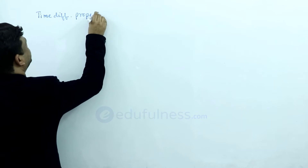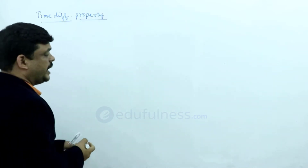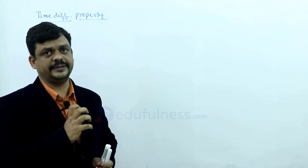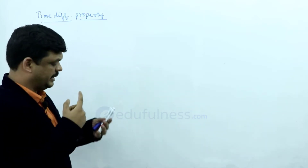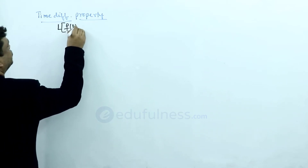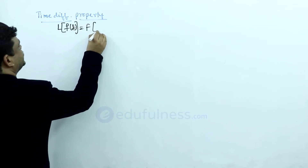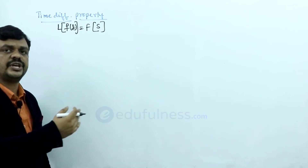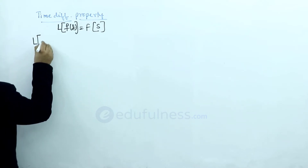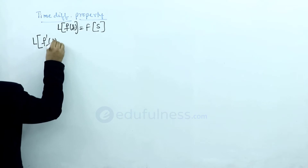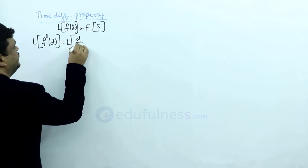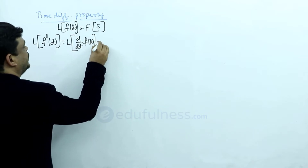Time differentiation property. The name explains itself: if the differentiation operation applies in the time domain, what changes occur in the frequency domain — that is what we have to discuss now. First, I am taking the basic equation: Laplace transform of f(t) is F(s). Then, immediately we have to write the Laplace transform of f'(t). Here, f' means the differentiation of f(t), that is d/dt of f(t).